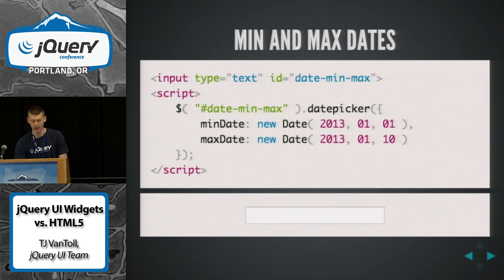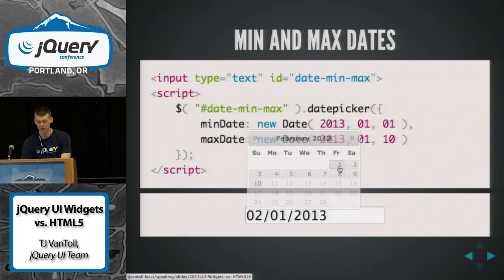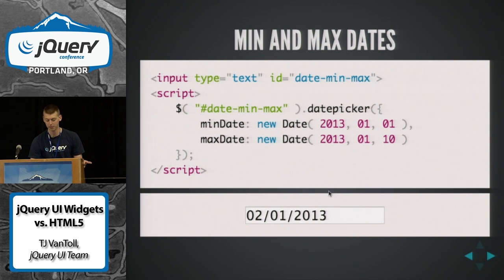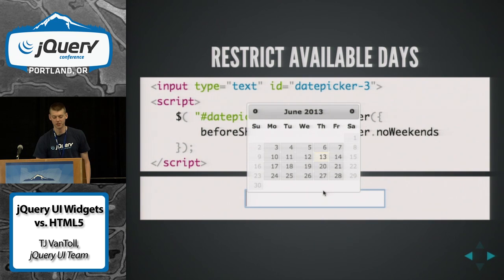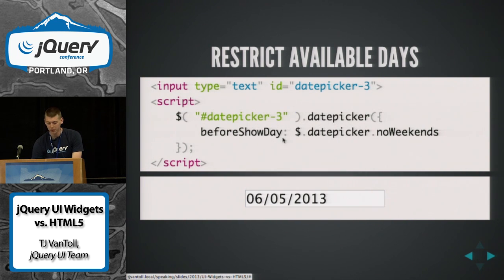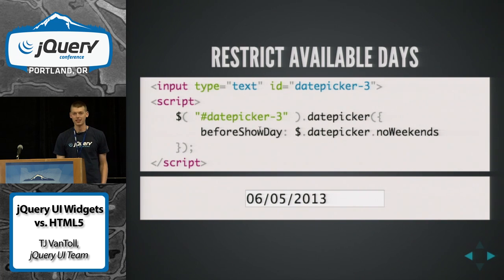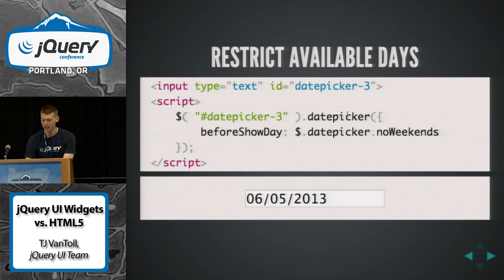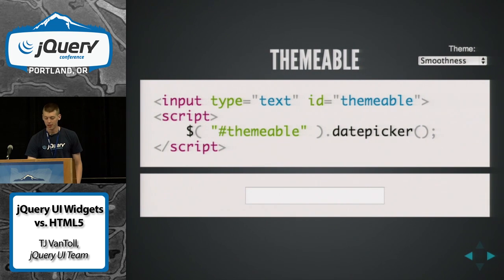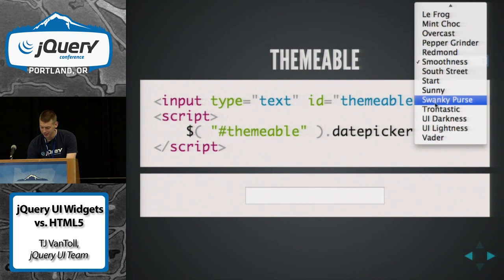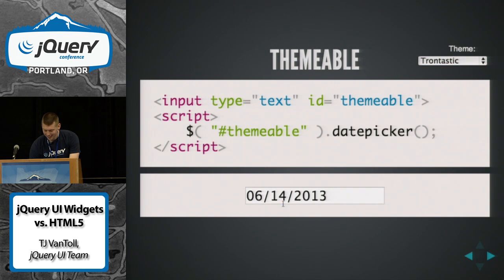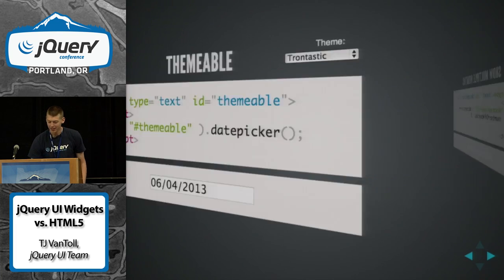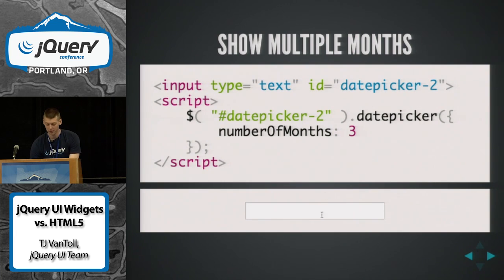To contrast, let's take a quick look at UI's date picker. You'll get a lot of the same controls. Min and max days — that's implemented. You can restrict available days, which is quite a bit more powerful than the step attribute. The beforeShowDay is just a function where you can whitelist or blacklist days. It gets called once per day and you can say I don't want them to pick March 3rd. The noWeekends is just a little helper function to block out weekends. They're also themable — let's go with Trontastic. That's a nice-looking date picker.